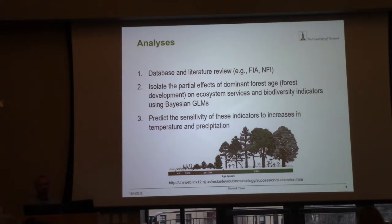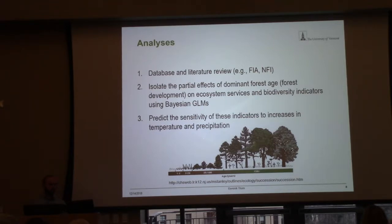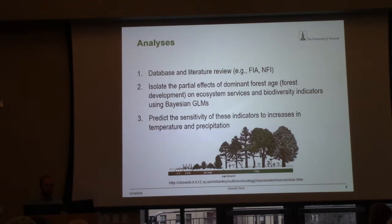Then we isolated the partial effects of dominant forest age — this is the age of the dominant and co-dominant tree species in the stand, used as a substitute and indicator for forest development. We checked how this is related to ecosystem services and biodiversity indicators using a full Bayesian approach with generalized linear models, probability-based. Then we used the final models to predict the sensitivity of these indicators to an increase in temperature and precipitation.